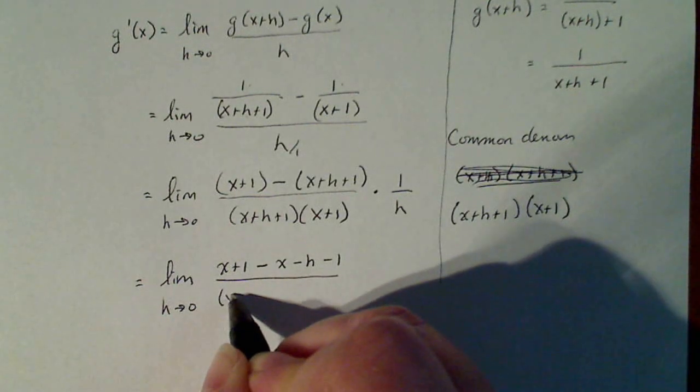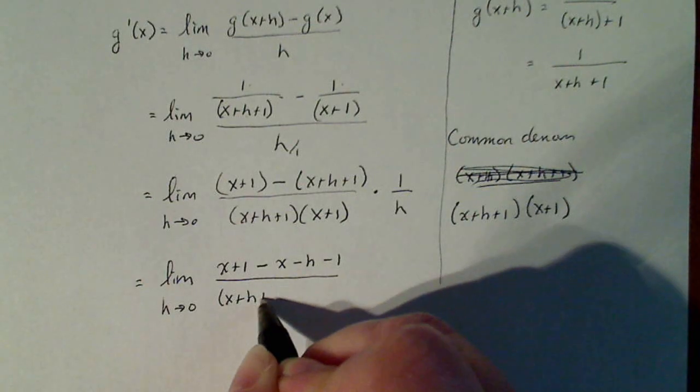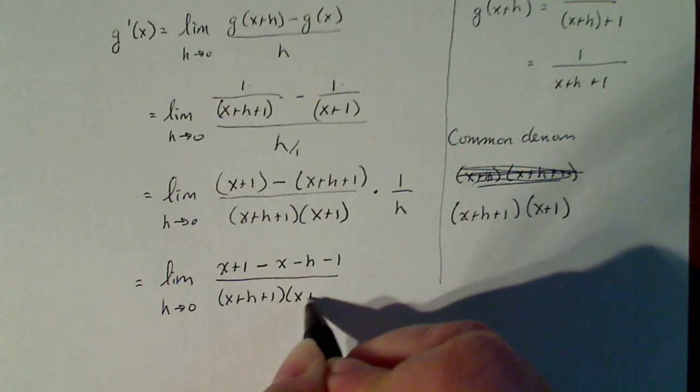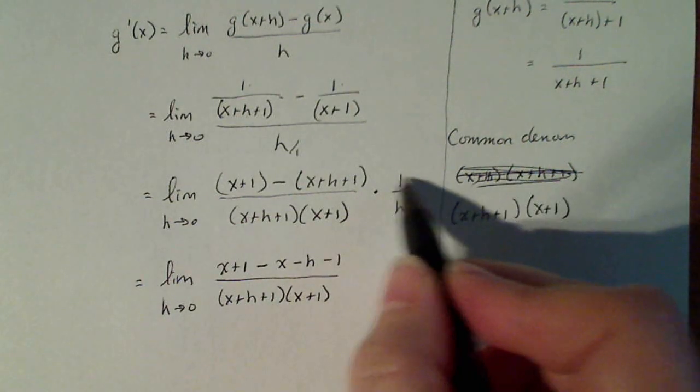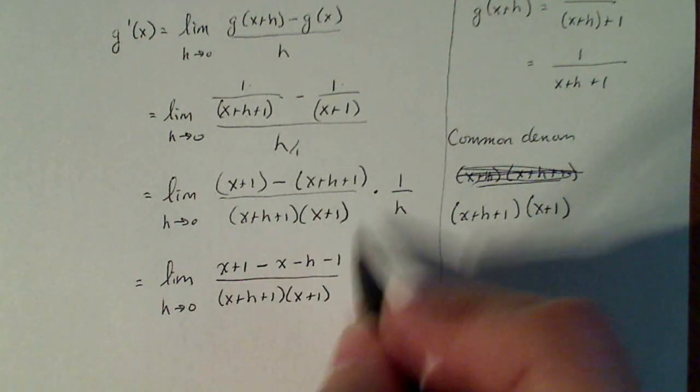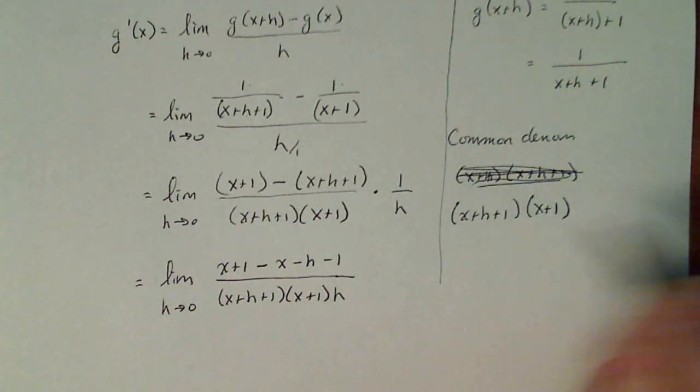So distribute that negative: -x-h-1. I'm going to leave the denominator as it is: (x+h+1)(x+1). Then I'm going to multiply the numerator by one, which leaves it the same, multiply the denominator by h, and that's what I got going on.